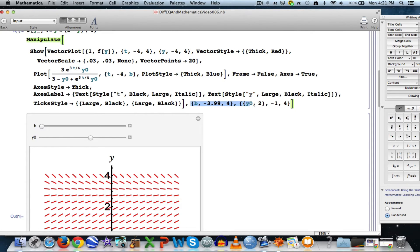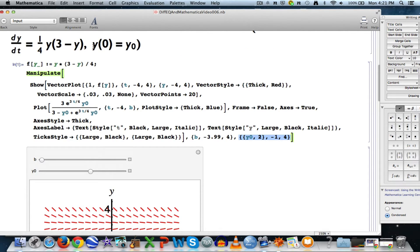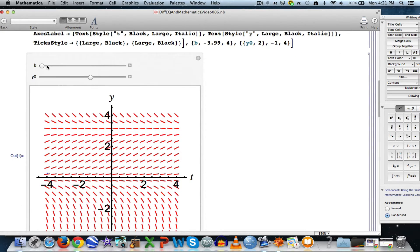If we put those inside Manipulate as the first argument of the Manipulate, that will make an animation, as we have two animation parameters that change: b, which is the right endpoint of the interval that we plot over, and y0, which is the y-coordinate of the initial condition y(0) = y0.